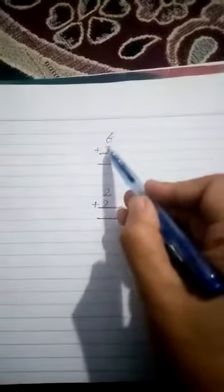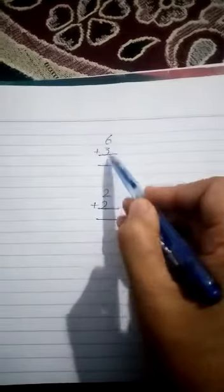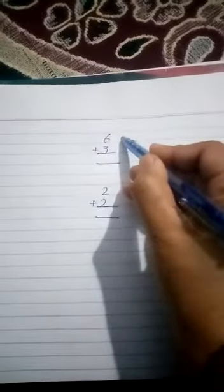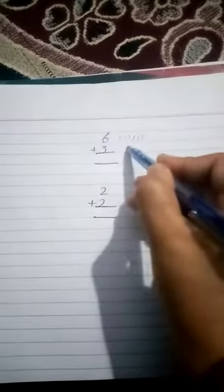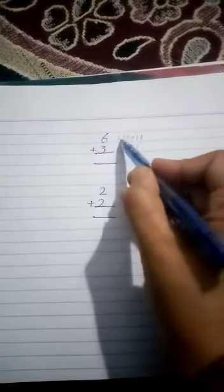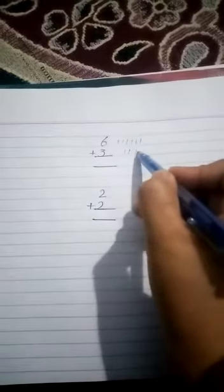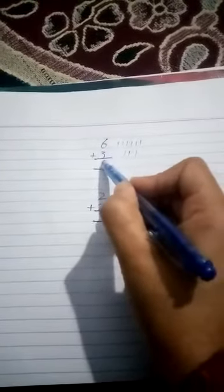Okay, good. Six plus three is equal to... we draw six lines on copy: one, two, three, four, five, six. And three: one, two, three. And count them: one, two, three, four, five, six, seven, eight, nine. Six plus three is equal to nine.